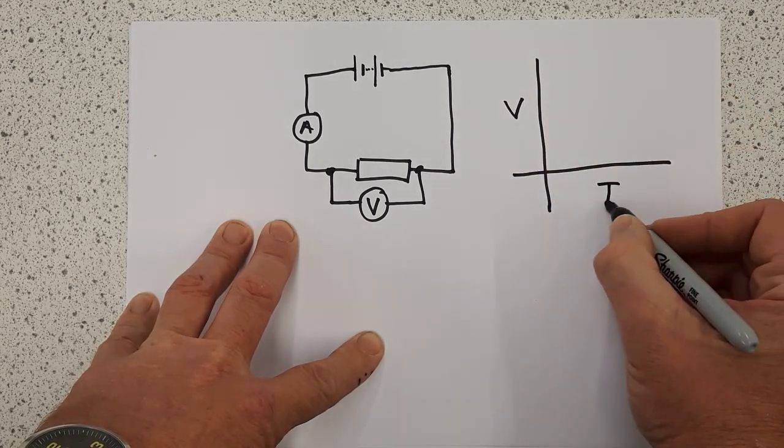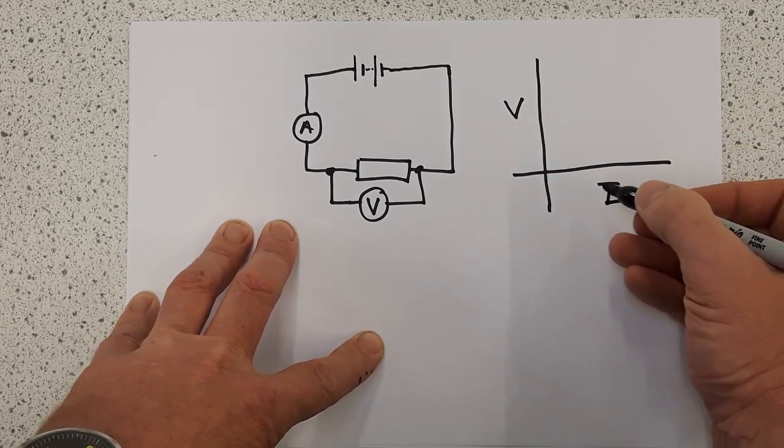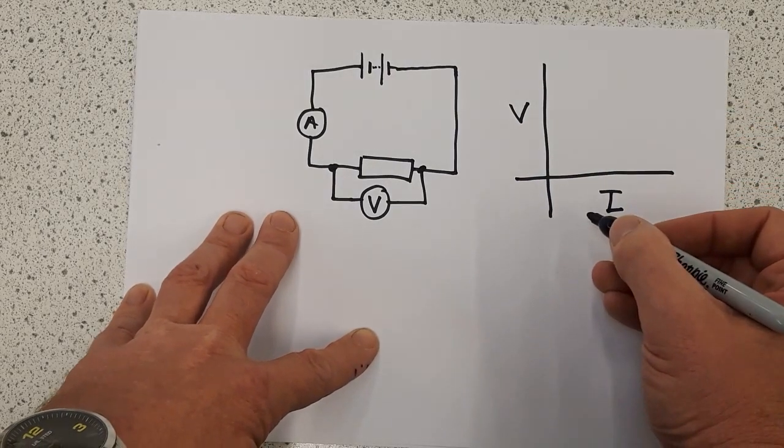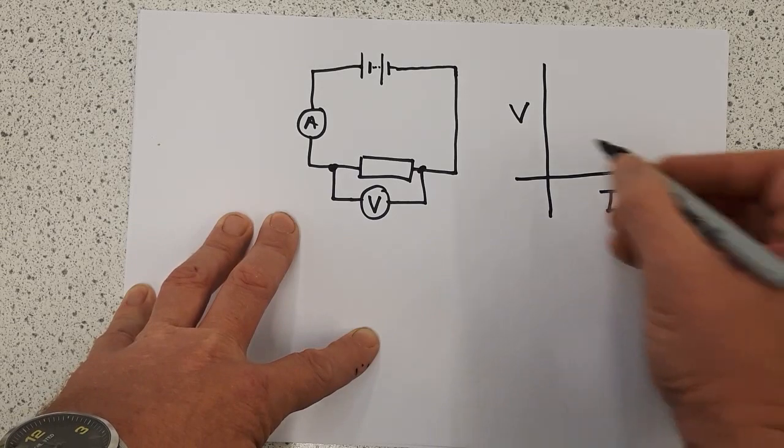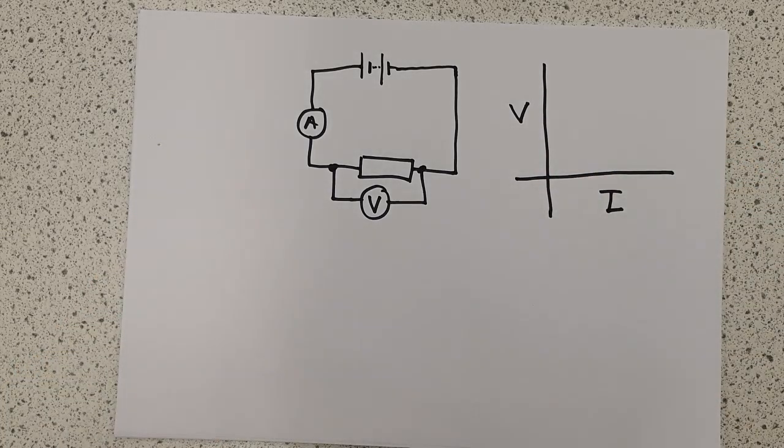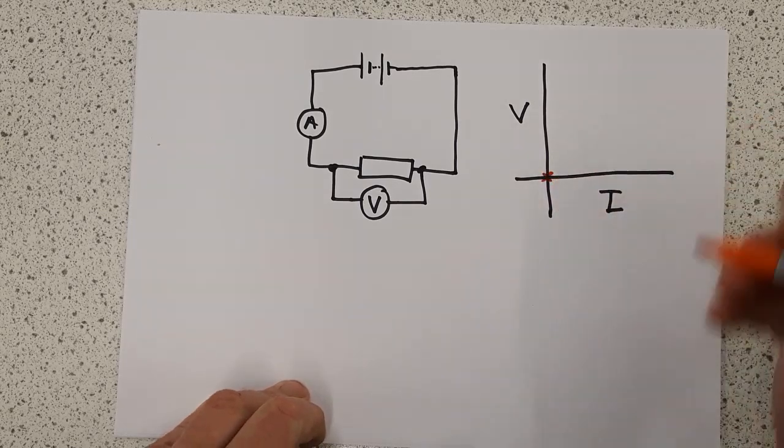Now I realize I'm putting voltage on the y-axis when it's the independent variable, but there is a reason for that. So if the voltage is zero, then no current will flow. So I end up with my first result there.